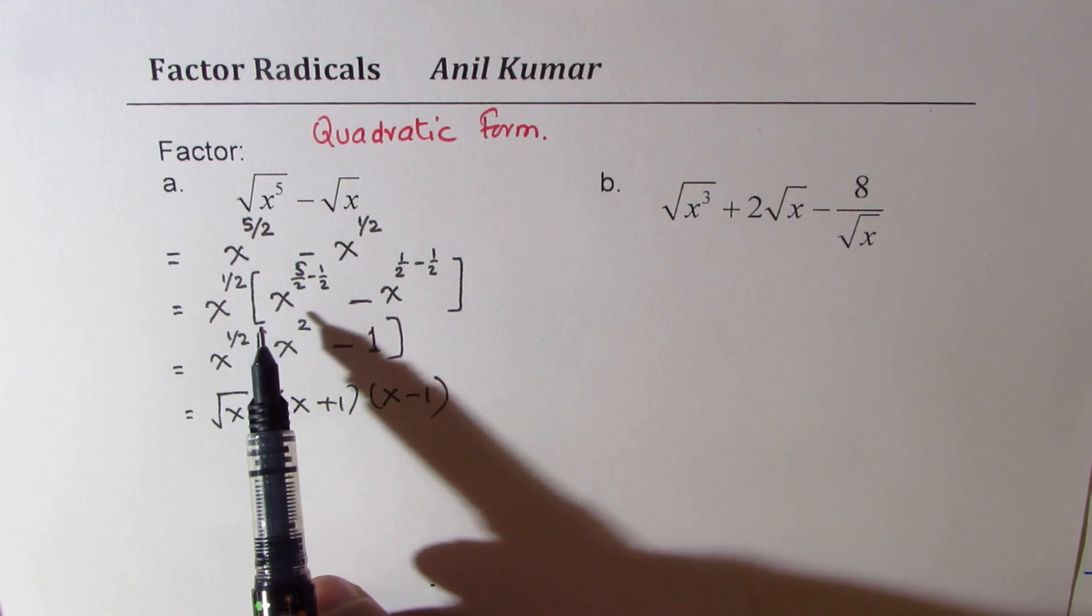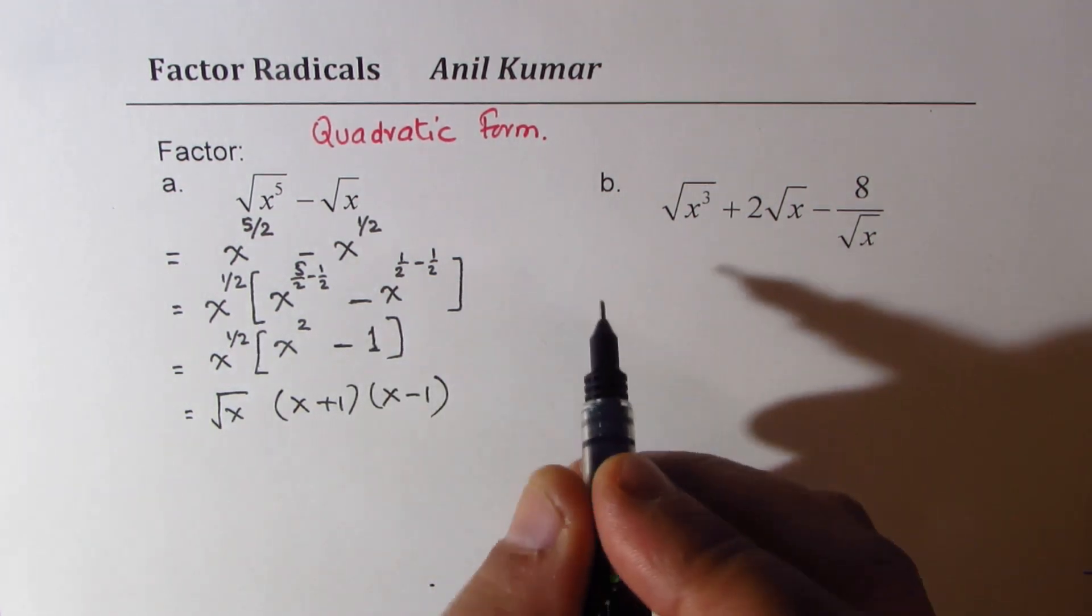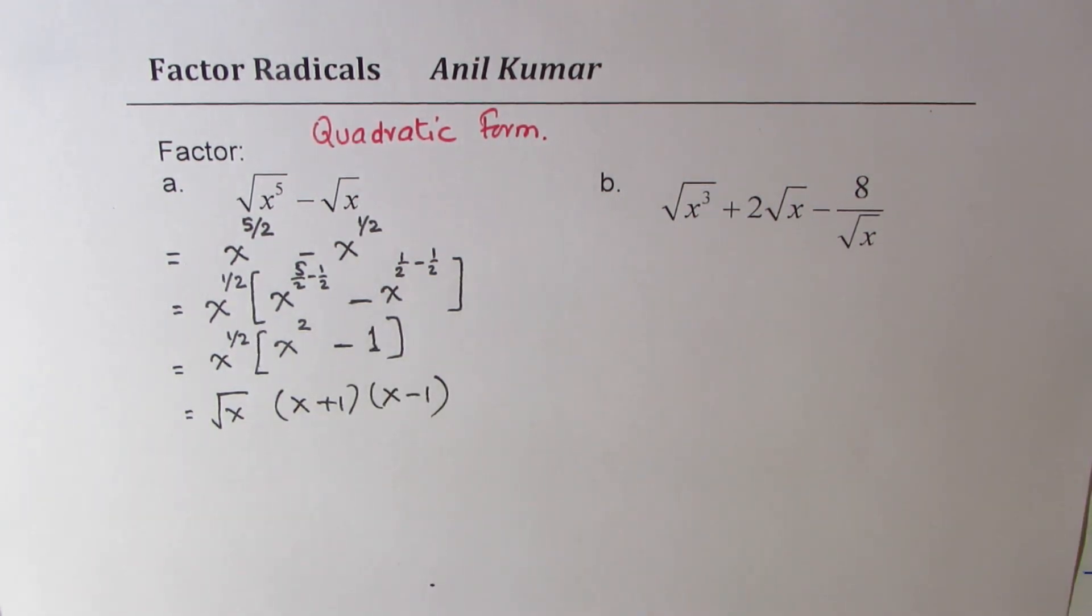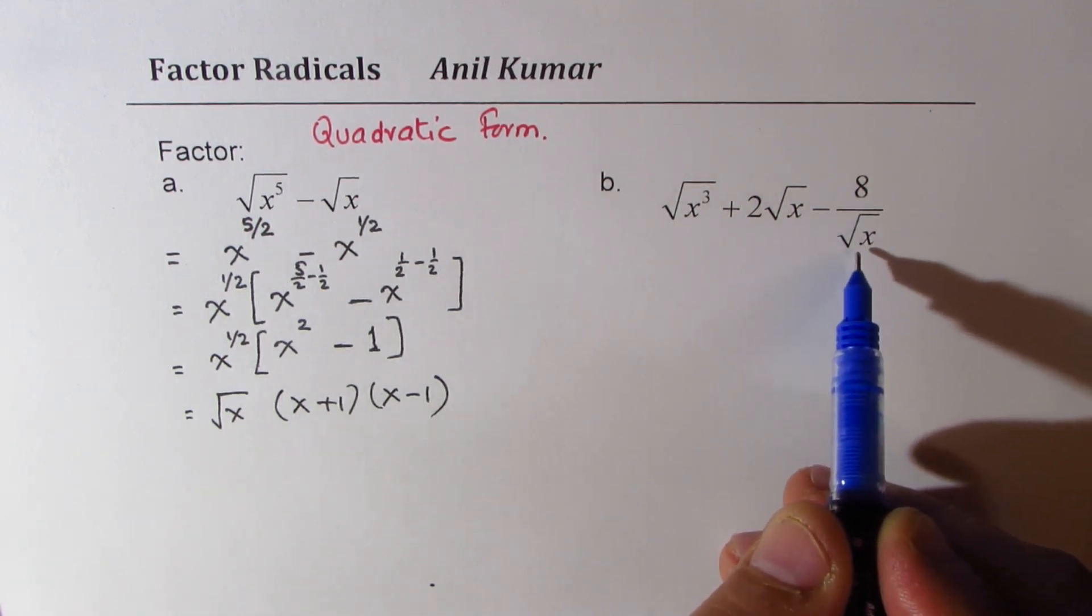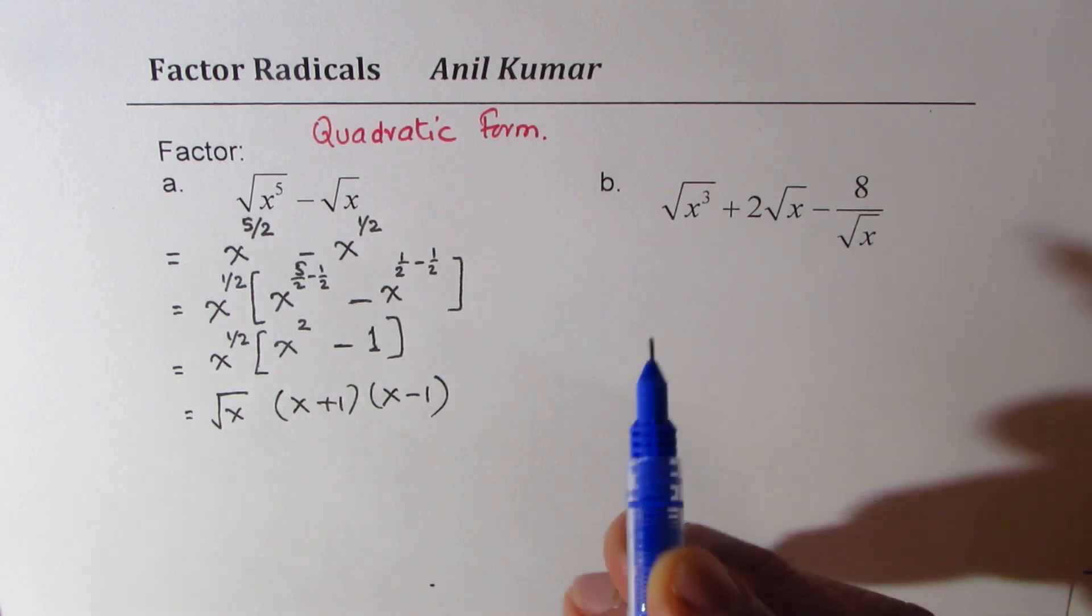Now, let's apply this learning and factor the next one. Here, we will multiply everything by square root x, 1 over square root x.